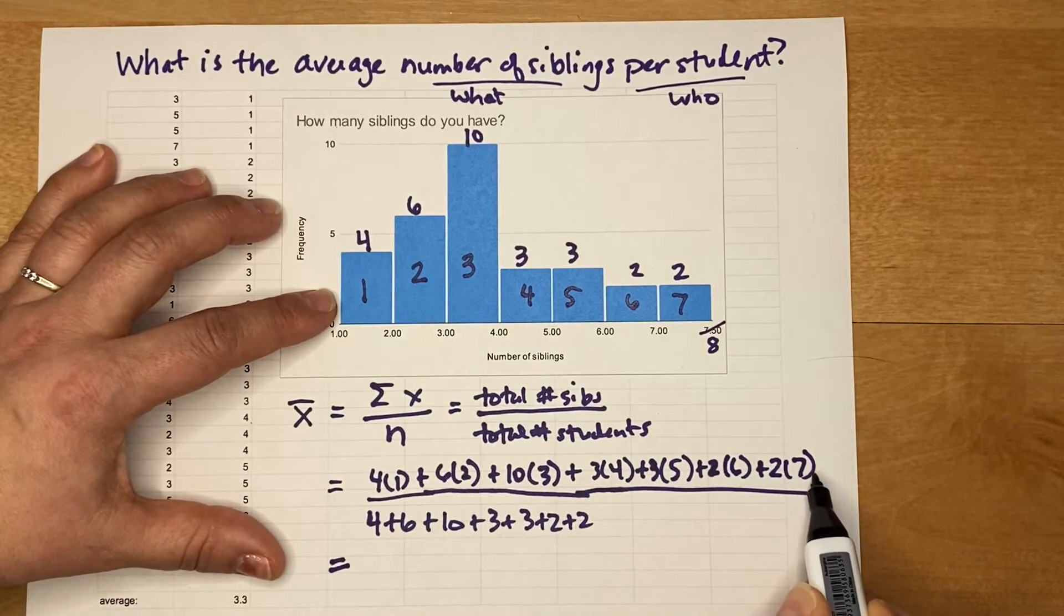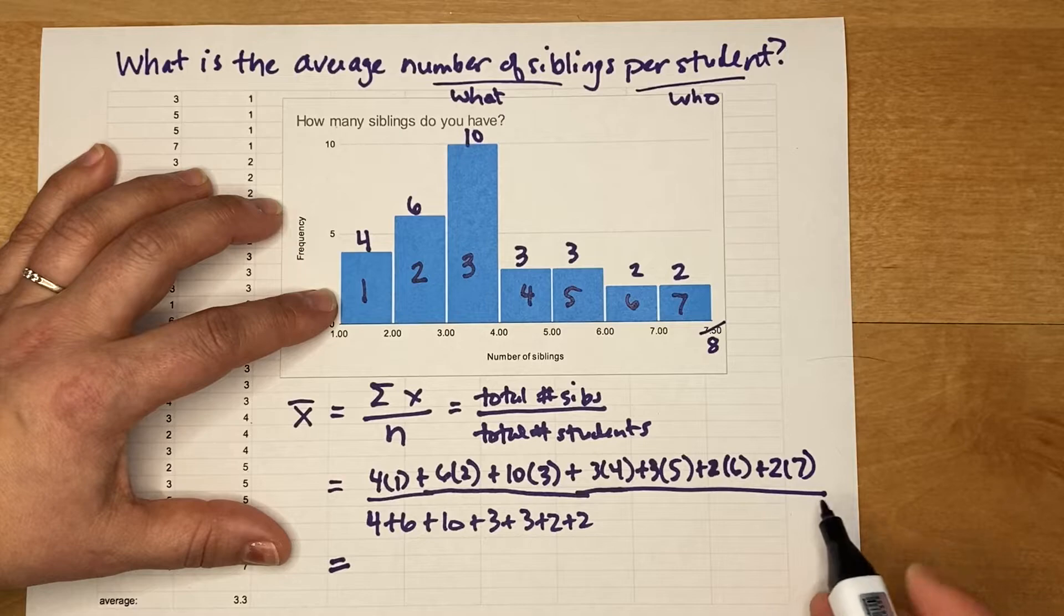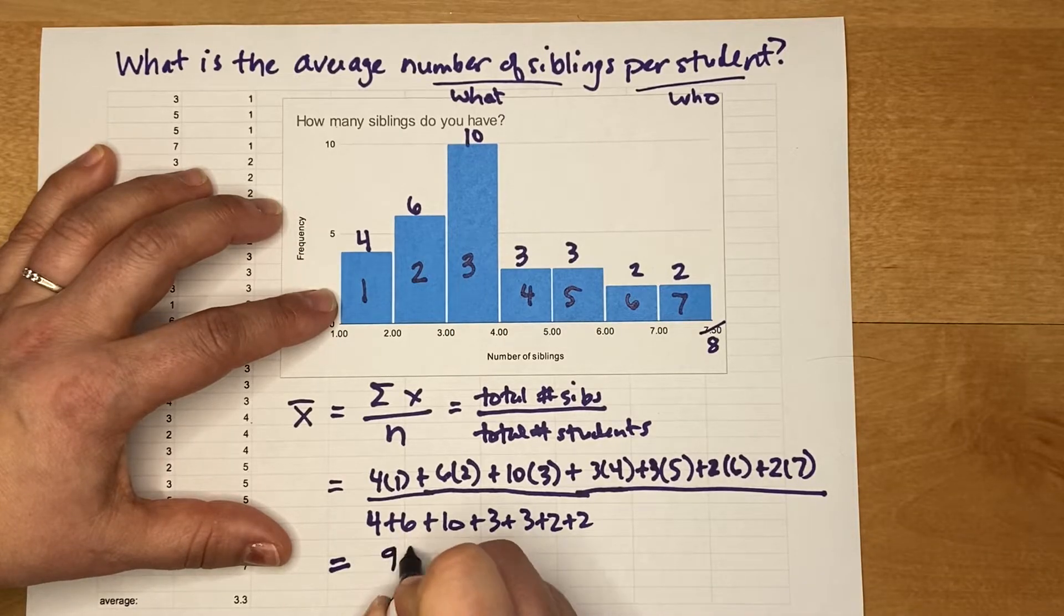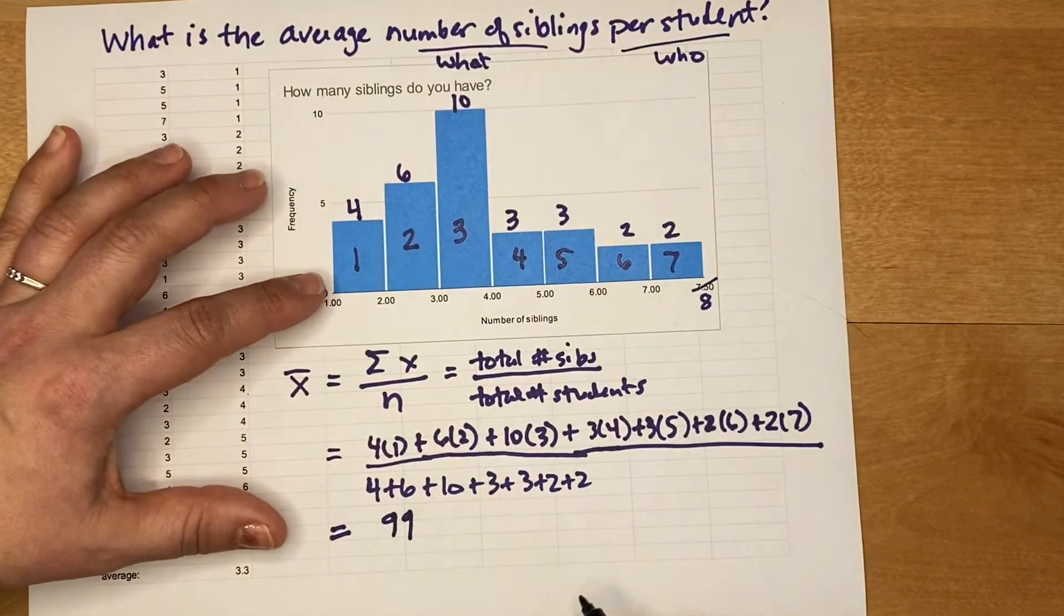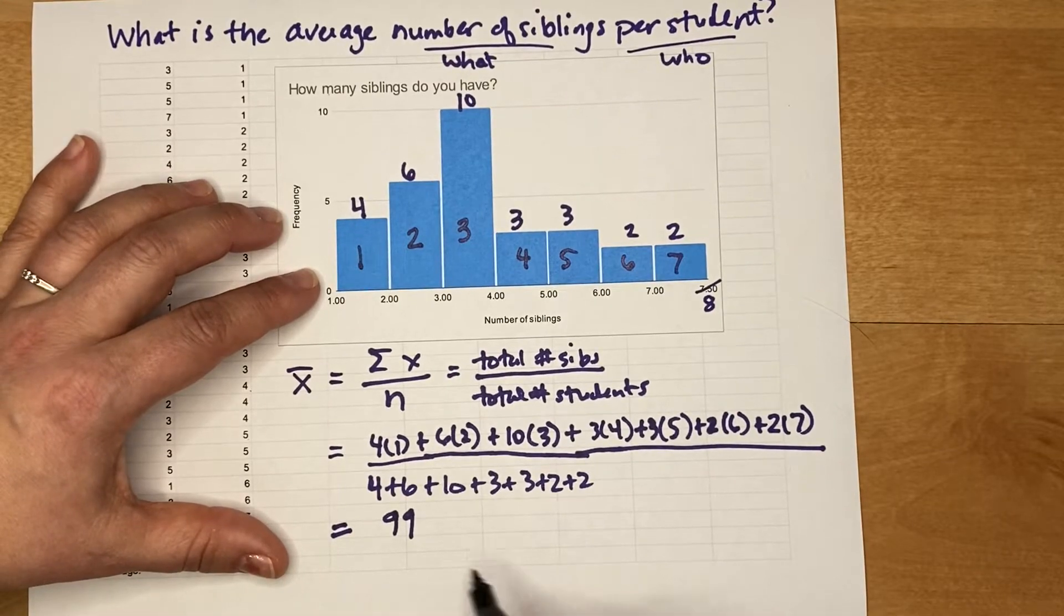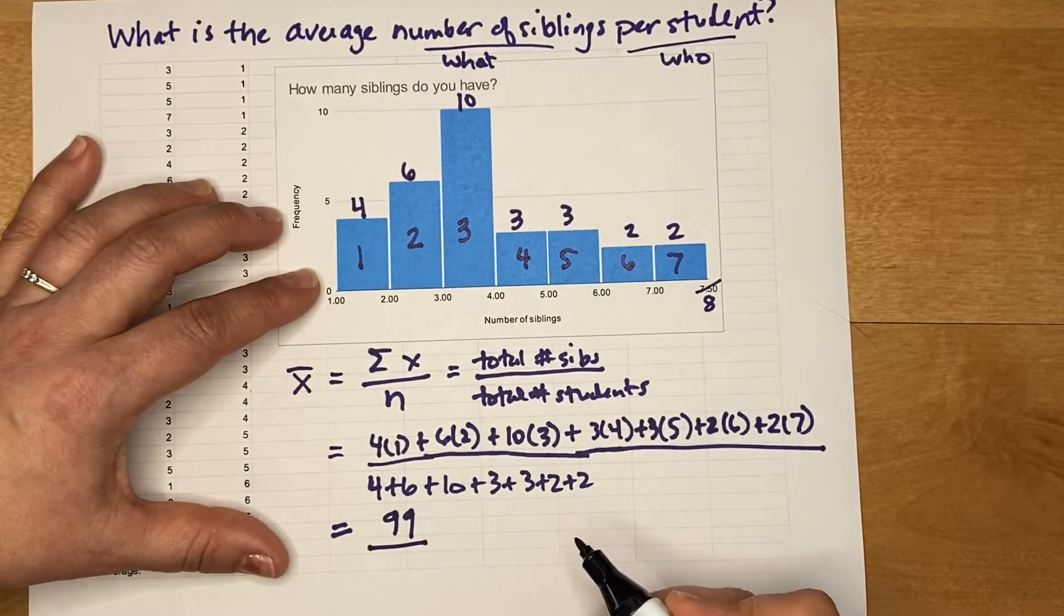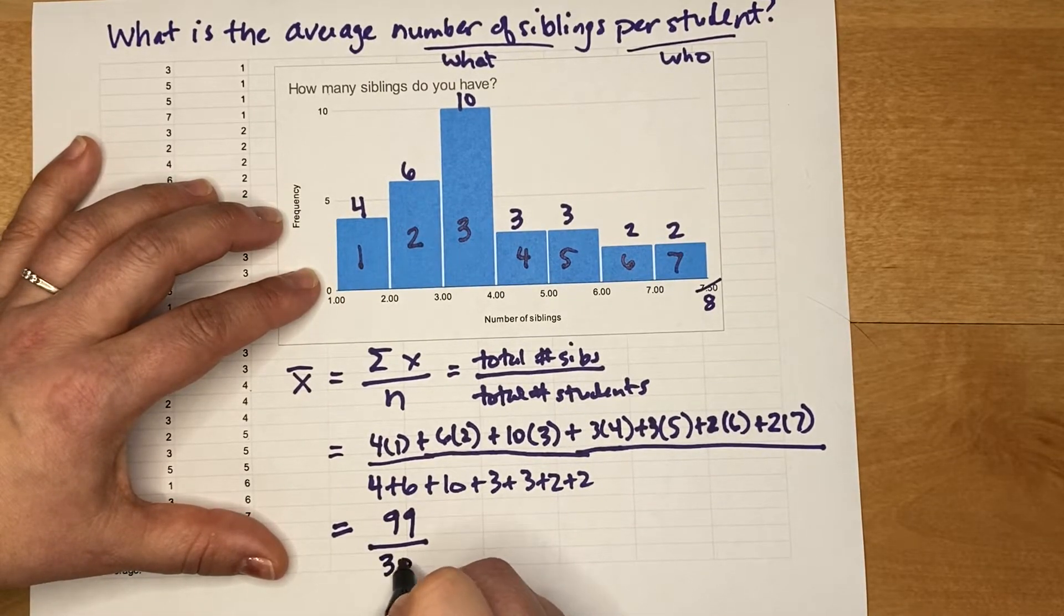All right, so to compute this average I'm going to now multiply all these numbers together and then add them all together. I did this on the side ahead of time and I got 99 siblings in all, and my sample size was 30 because there were 30 students.